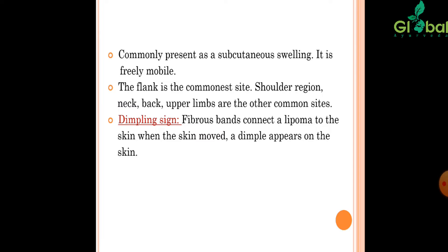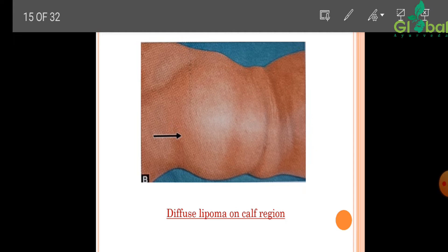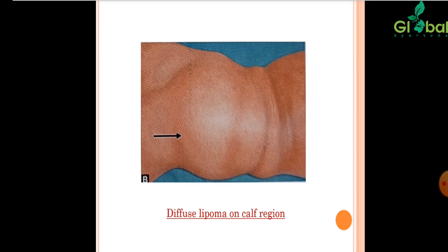Multiple Lipomatosis: such lipomas are multiple. Dercum's disease is one example of this variety, wherein tender lipomatous swellings are present in the body, mainly the trunk. Uncapsulated Lipoma: the diffuse variety is a rare type of Lipoma, also called pseudo-lipoma. It is an overgrowth of fat without a capsule. The diffuse lipoma on the calf region is an example.